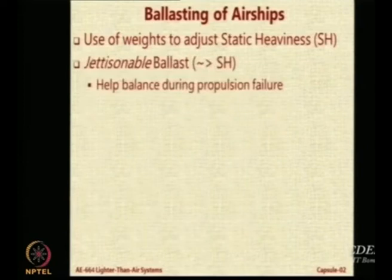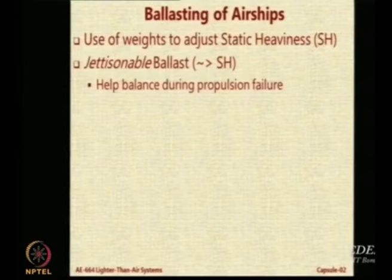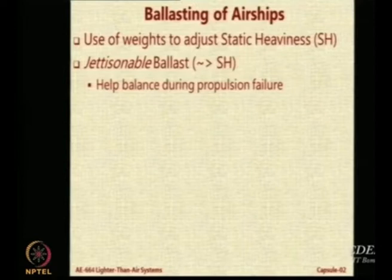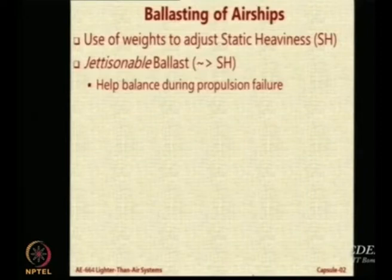There are three types of ballast normally available on airships. One is called the ballast which can be discarded — that is, jettisable ballast. This helps balance during propulsion failure, but you do not throw it when you have propulsion failure. If you throw it, the airship becomes light and will not come down, and you have no propulsion system. So this jettisable ballast is there to ensure that you are heavier than air.